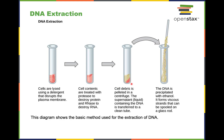You spin this at a high speed, and the gunk we don't want goes to the bottom. What we want goes to the liquid. So then the liquid is transferred into another tube, and DNA is precipitated with ethanol.